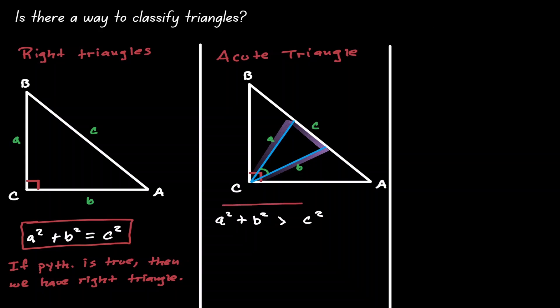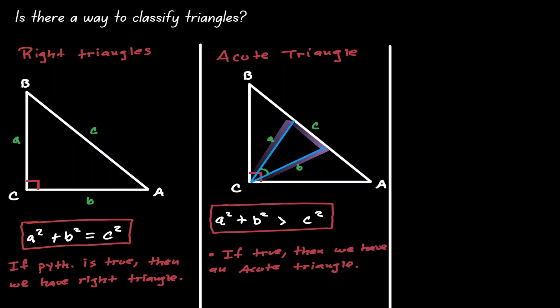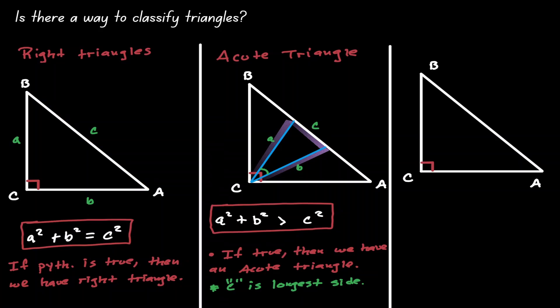When this inequality is true, then we can conclude that we have an acute triangle, where C is the greatest length of the three sides in our triangle. Notice what we have done: what was the hypotenuse — the longest side in our triangle — we had to shrink its length.